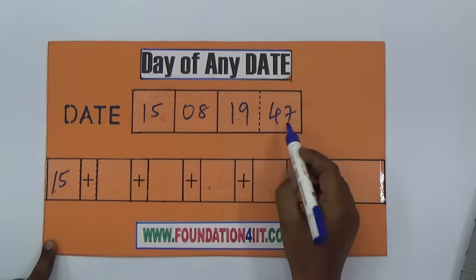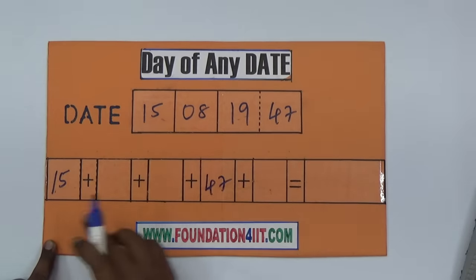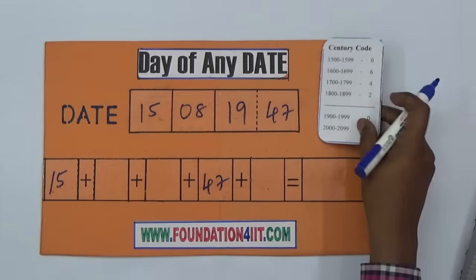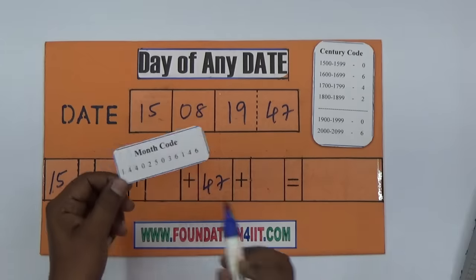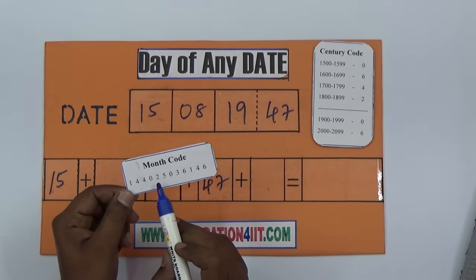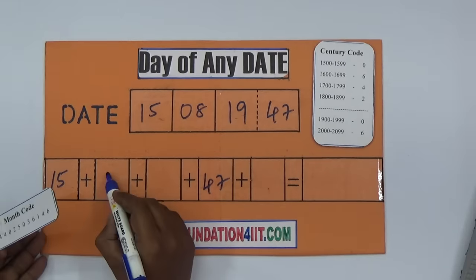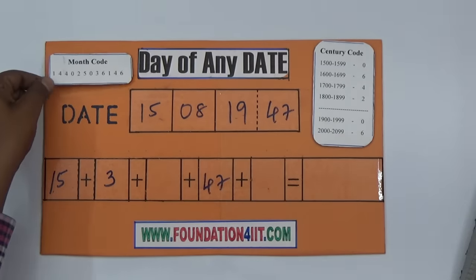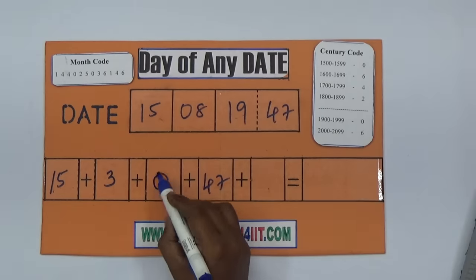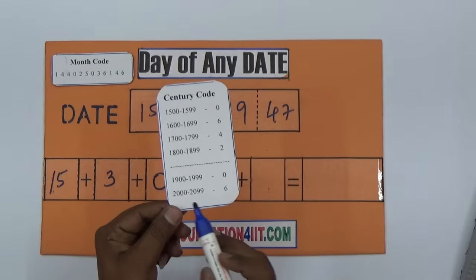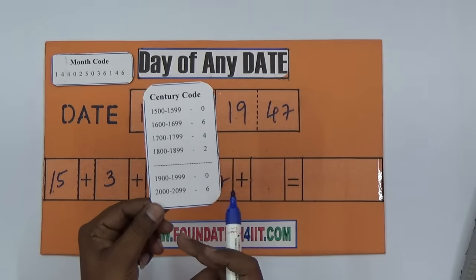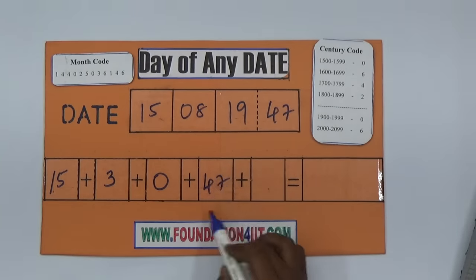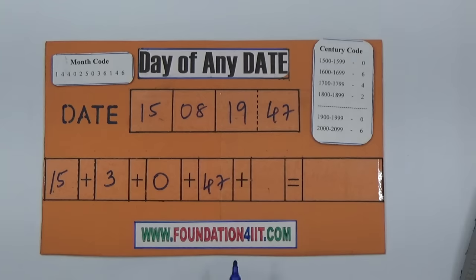1947, so we got freedom. What day was it? Very simple. 15 as it is, 47 as it is. First and fourth place as is - no change. Only month and century code. According to the month, it is August. January, February, March, April, May, June, July, August is 3. Then 19th century is 0. 20th century is 6. 21st century is 4. 22nd century is 2. This order repeats.